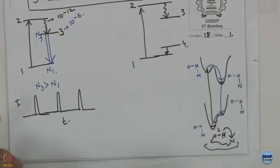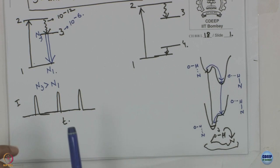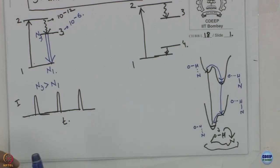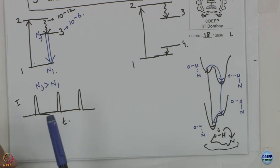Then whatever emission takes place will be from the proton-transferred excited state back to its corresponding ground state. But since that ground state is energetically not favorable, the moment it has any population, it comes back — giving you a four-level system. That is why ESIPT molecules have been touted for a long time as good candidates for making lasers.